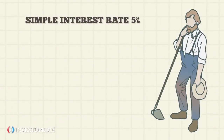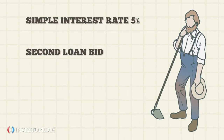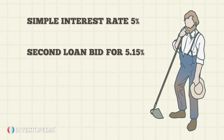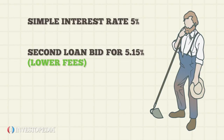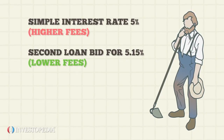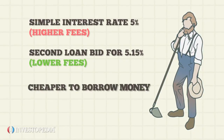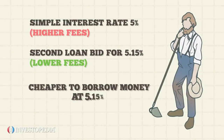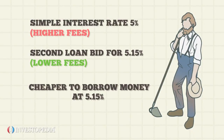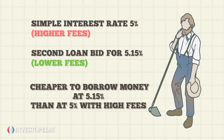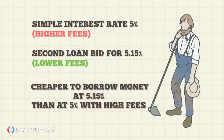For example, Mr. Farmer may get a second loan bid from another bank for 5.15%. However, this loan may have much lower fees than the loan at 5%. After accounting for fees, Mr. Farmer may find that it is cheaper to borrow money at 5.15% with low fees than at 5% with high fees. This shows that simple interest by itself is not always the best way to compare loans.